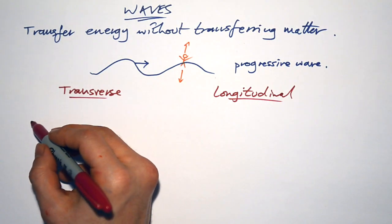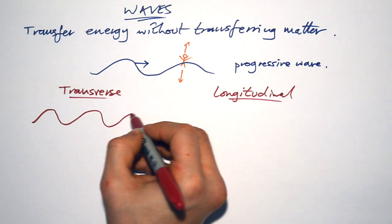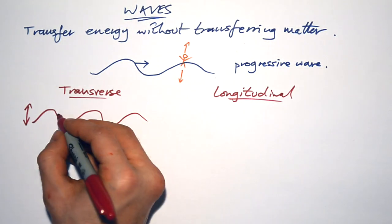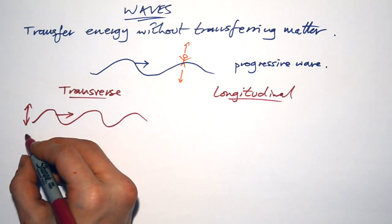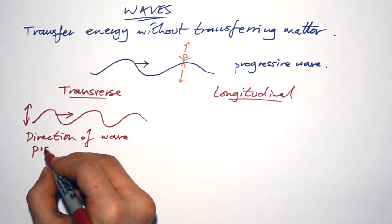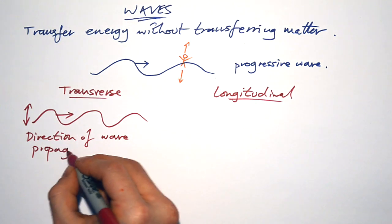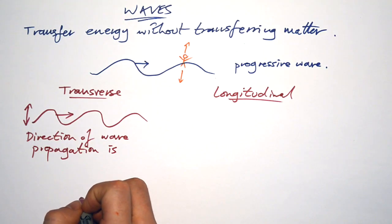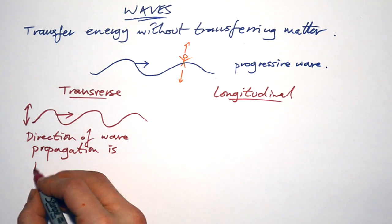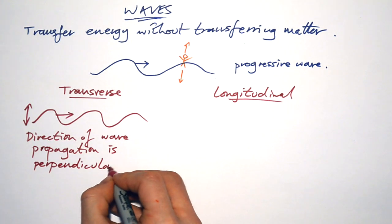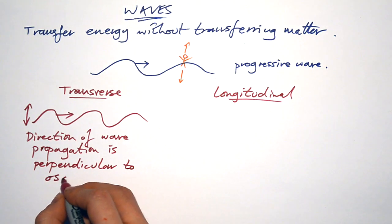Transverse waves actually look like this, like a water wave. The oscillations go up and down. The wave goes that way. In other words, the direction of wave propagation is perpendicular to the oscillations.